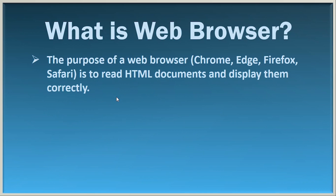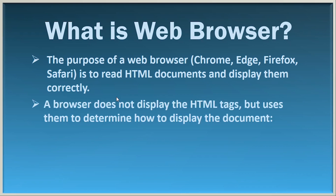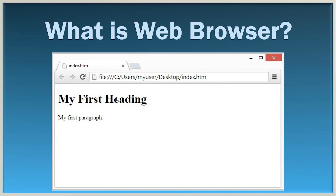So what is a web browser? The purpose of a web browser is to read HTML documents and display them correctly. A web browser doesn't display the HTML tags but uses them to determine how to display the document. Here is a simple view of a web browser that reads the HTML contents, heading contents, and the paragraph contents.